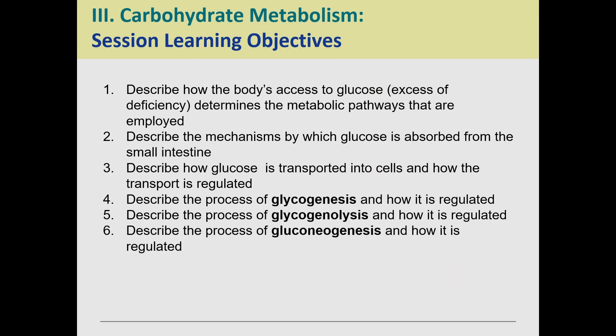Now we're going to get into carbohydrate metabolism. Basically, we're going to talk about how the body's access to glucose determines which metabolic pathways are used. We'll talk about how glucose is absorbed from the small intestine, how it gets transported into cells, how we regulate that, how we go through glycogenesis and glycogenolysis, and then gluconeogenesis. So we'll talk about all three of those processes.